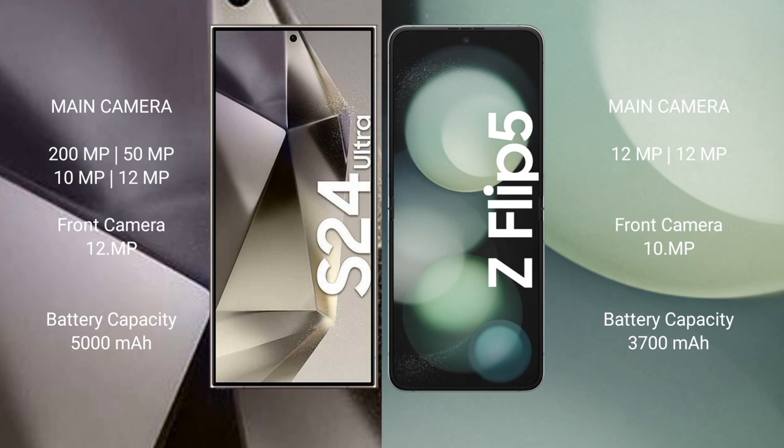Samsung Galaxy S24 Ultra features a quad camera setup: 200MP plus 50MP plus 10MP plus 12MP, and a 12MP front camera.